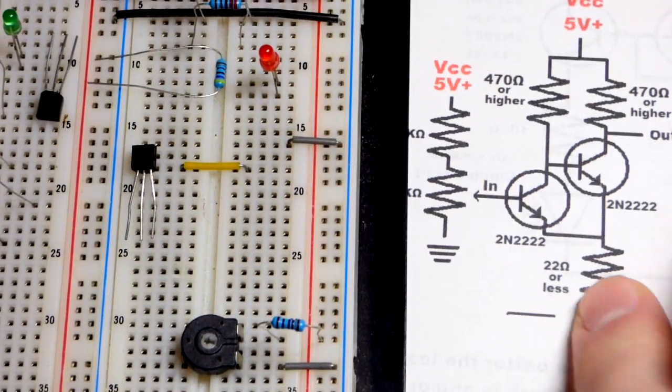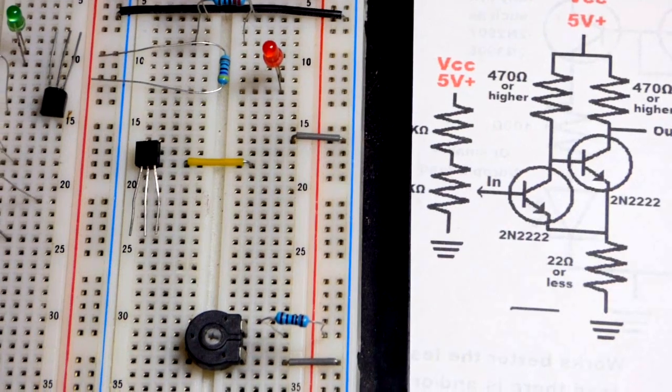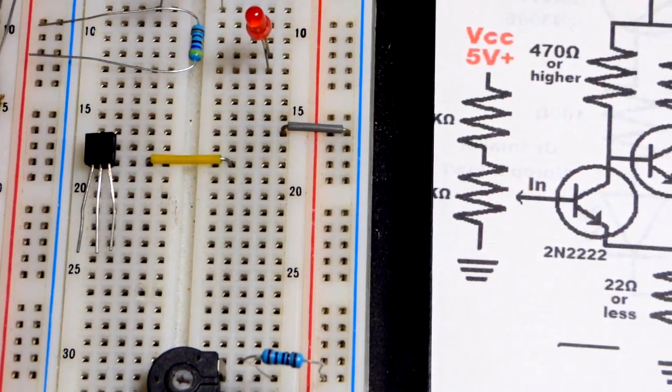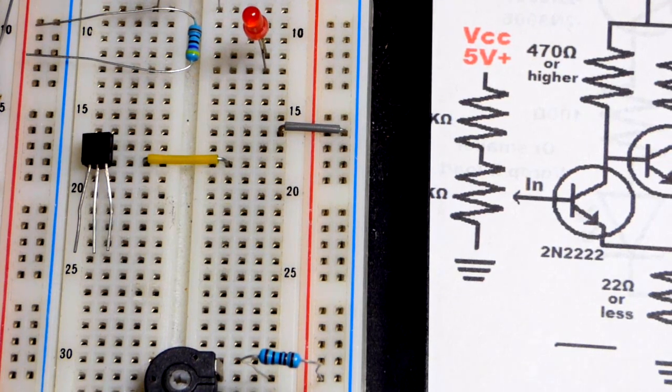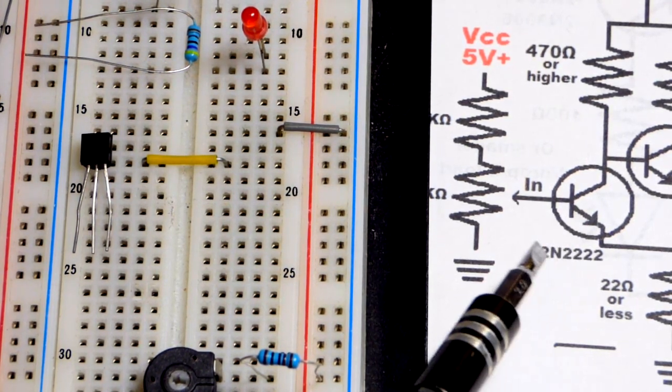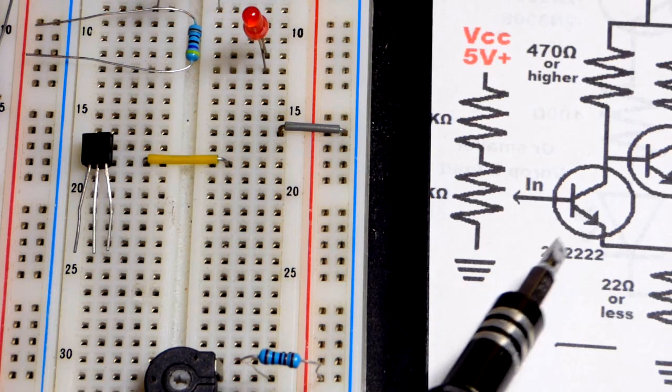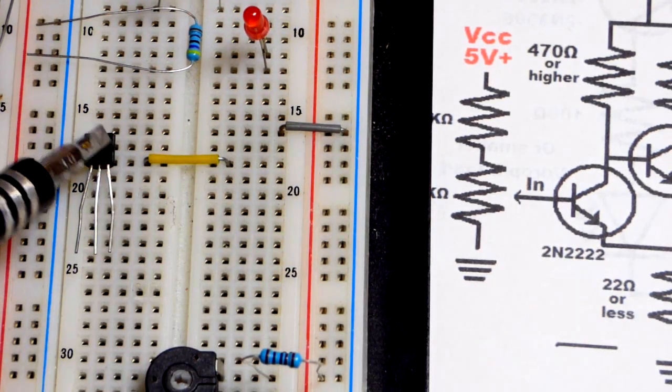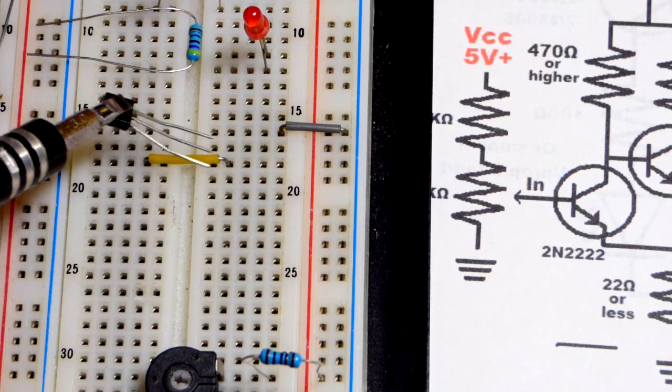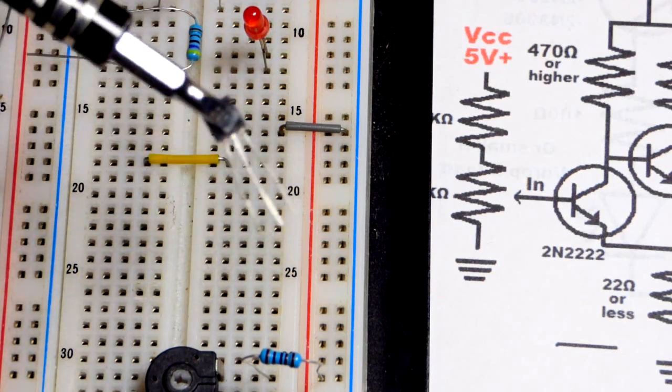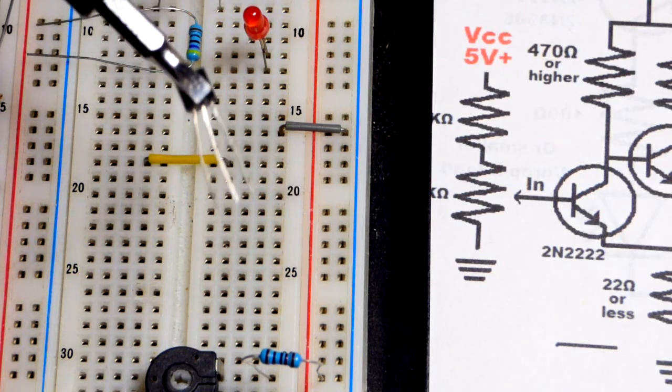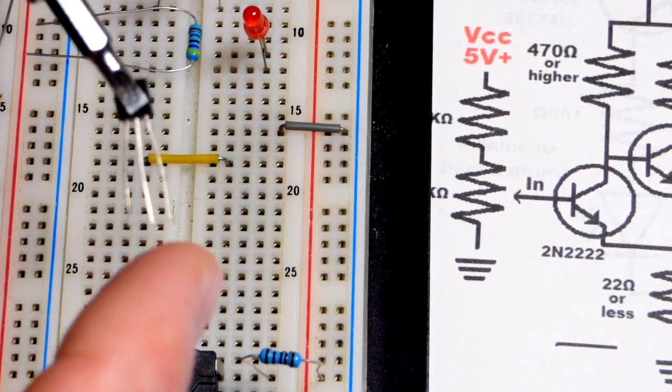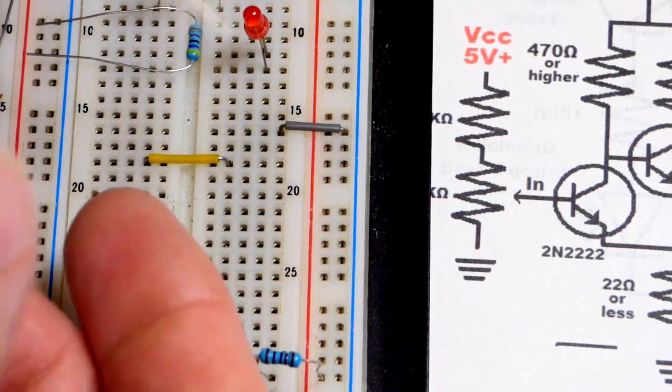So to begin with, the main component in this is the NPN bipolar junction transistor. So I'm using a 2N2222. Any NPN bipolar junction transistor should work. Its pin layout may be different, but if it starts with a 2N, such as the 2N2222, it probably has the same pin layout. So we're looking at the flat side right now. And this is a magnetic screwdriver.